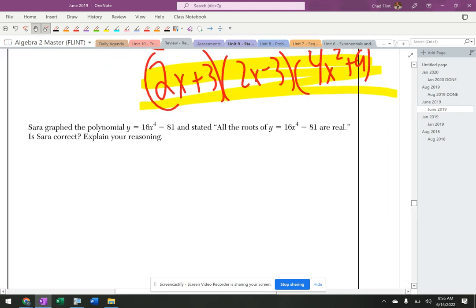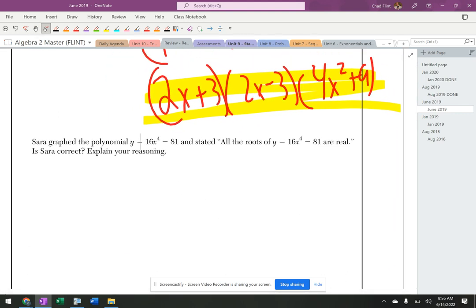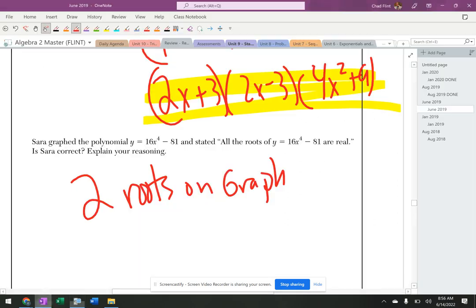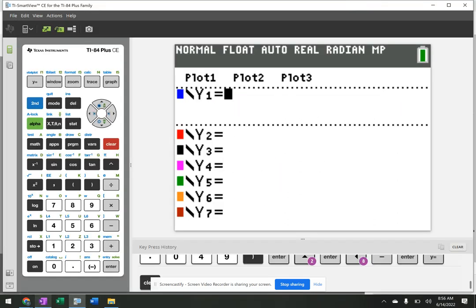The second one says someone graphed this and said all the roots are real. Is that right or not? If you graph this, it's going to be a parabola and it's going to have two roots. Let me actually graph it and drag and drop it in here.